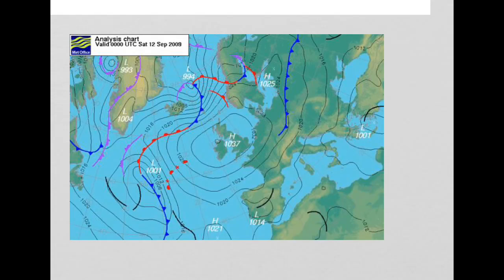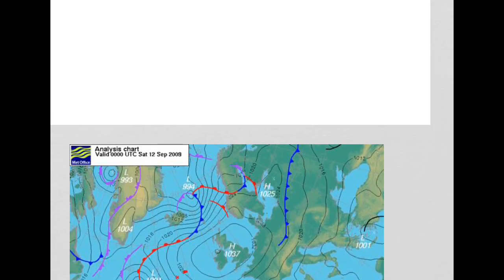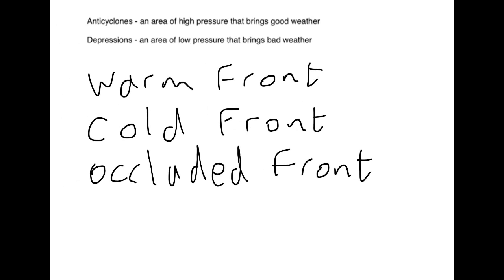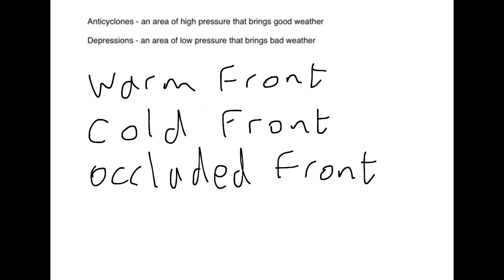This video is designed to talk you through the anti-cyclones and depressions section of your GCSE course. An anti-cyclone is an area of high pressure that brings good weather, and a depression is an area of low pressure that brings bad weather.